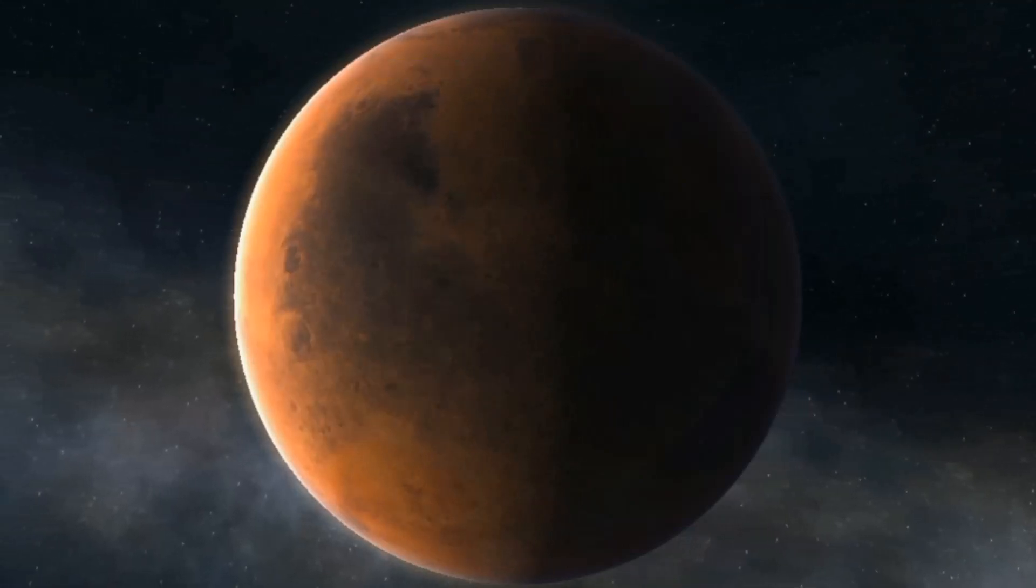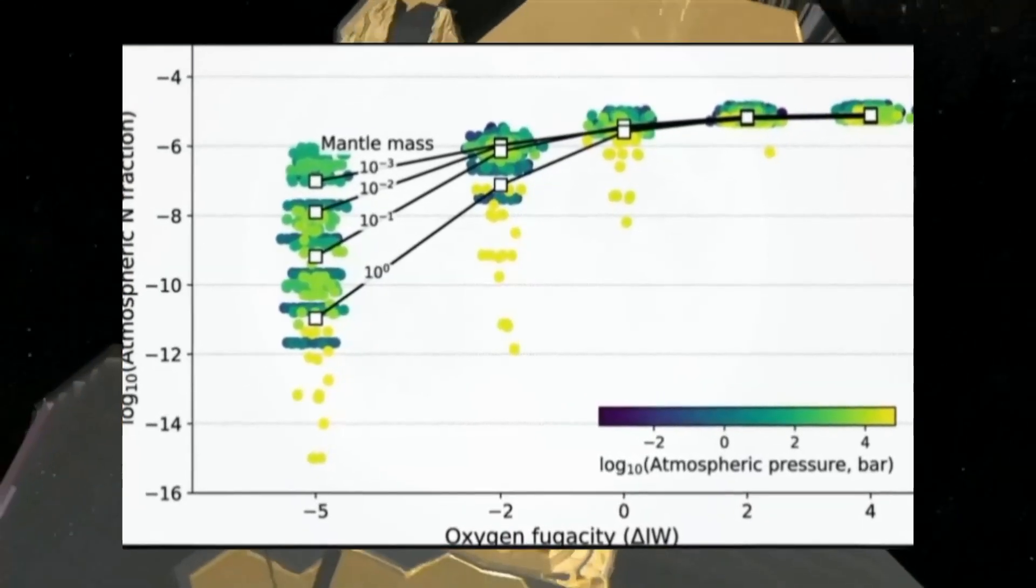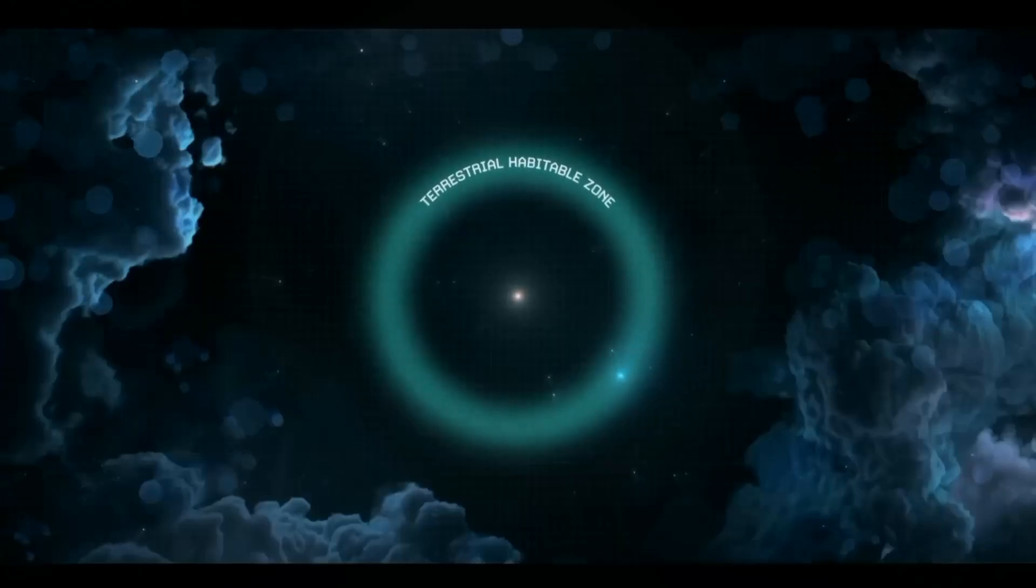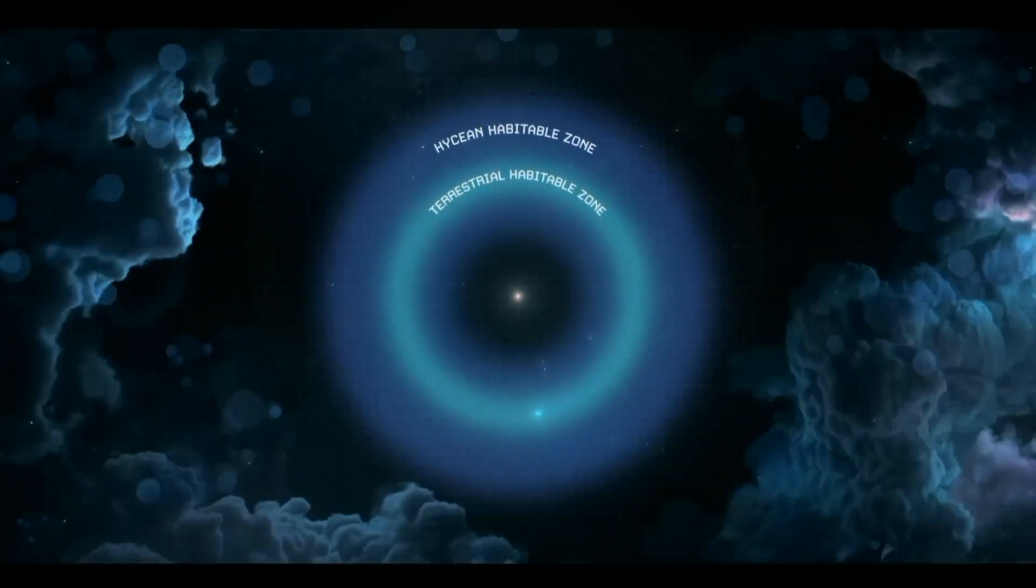However, amidst the enthusiasm, researchers have noted that a model of the exoplanet being a gas-abundant, uninhabitable world corresponds neatly with the observations from the JWST and might pose fewer scientific quandaries.